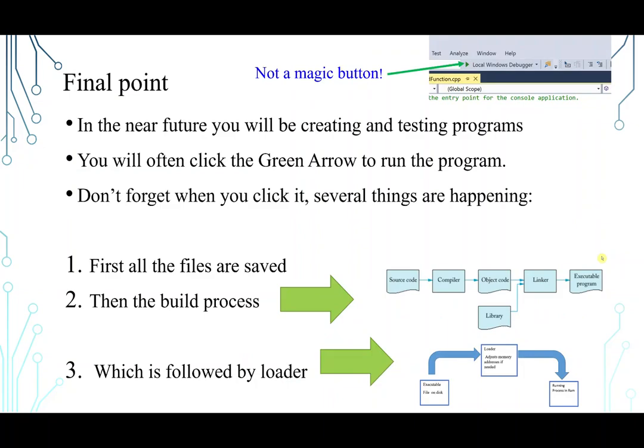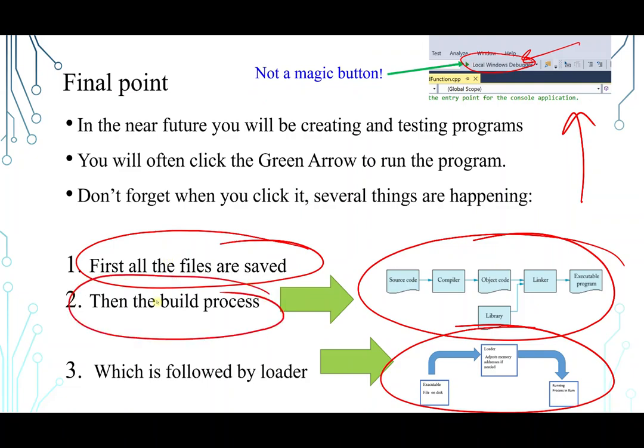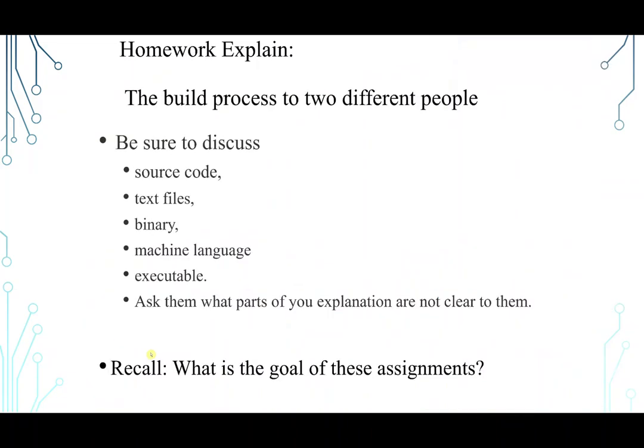Okay, final point. When you have to deal with the Visual Studio, you will see a green button like this one. So basically, this is not a magic button. This is a button that does both processes, the building process and the loading process. So in the near future, you will be dealing with this program, the Visual Studio. You're going to be creating and testing programs. And you will often click on green arrow to run the program. This one. Whenever you are doing that, just remember that you're doing three steps: saving your changes, what you have changed on the .cpp file, doing the whole build process, and then following that by loading the program. This is what you are doing.